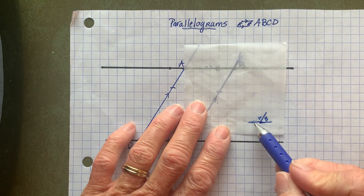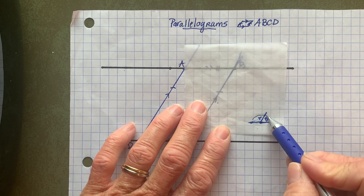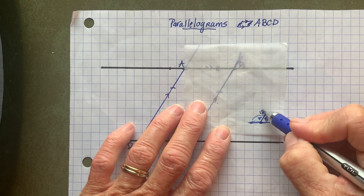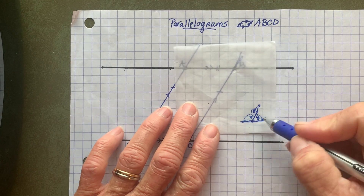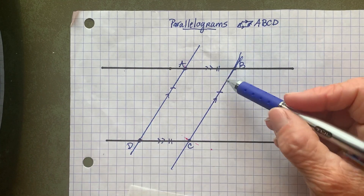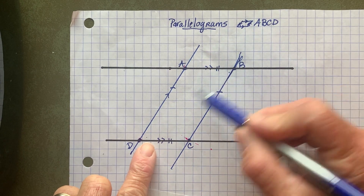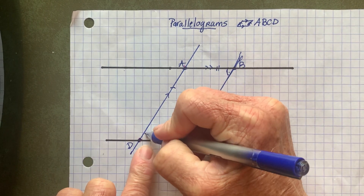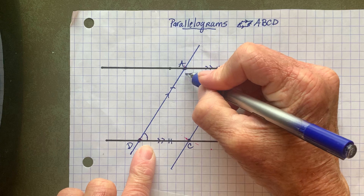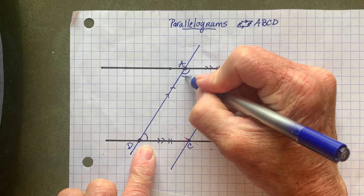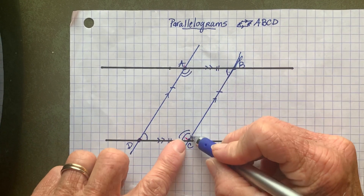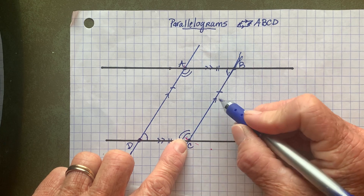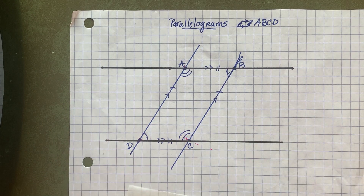Notice that A and B make a linear pair, and these two angles are going to add up to 180 — they're supplementary. The opposite angles are congruent to one another; A was congruent to C. And the consecutive angles were supplementary — they added up to 180.